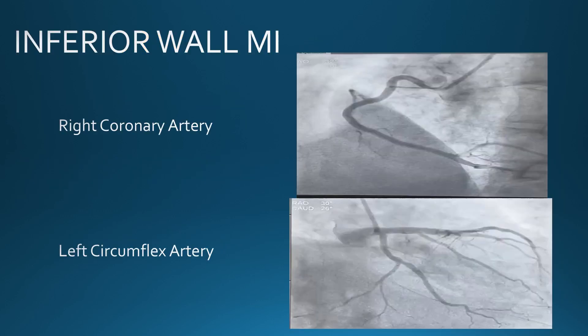Inferior wall MI can be caused by two different arteries. It is commonly caused by the right coronary artery (RCA), but sometimes when the left circumflex artery is dominant — meaning it gives rise to the posterior descending artery (PDA) — the inferior wall MI can be caused by the left circumflex. This creates a clinical dilemma regarding management, since we need to identify which artery to open.